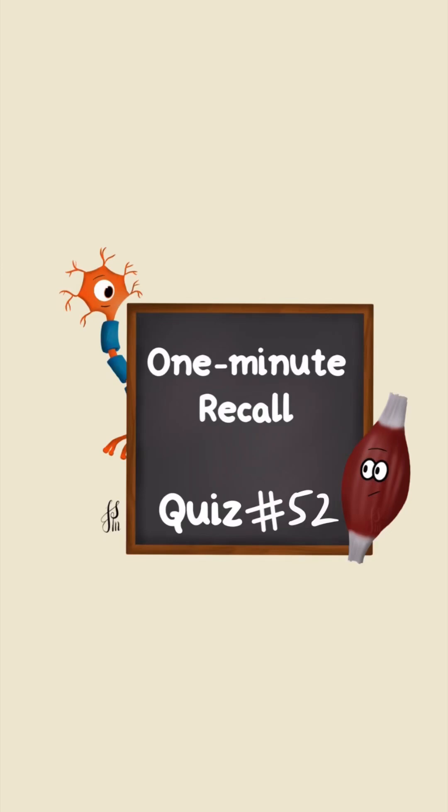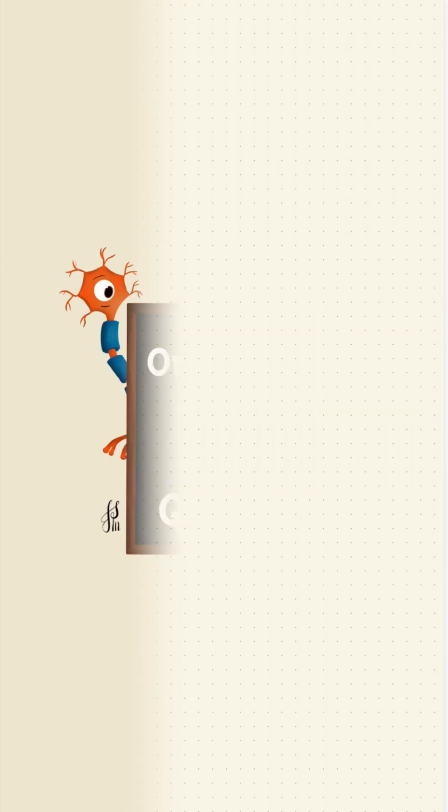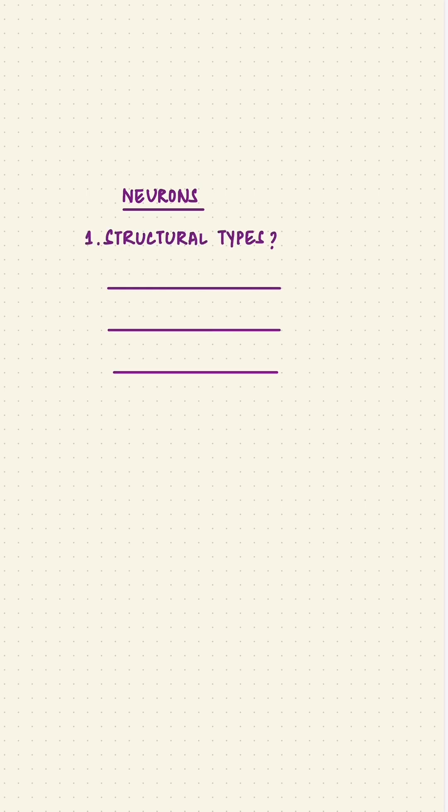Hello, today's one minute quiz for recall is on neurons. Structurally, there are usually four types of neurons. Your task is to recall the names of all four types. Which of these is the most common?